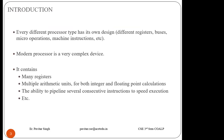Every different processor type has its own design — it has different registers, different buses, different micro-operations, and machine instructions. A modern processor is a very complex device; it contains many registers, multiple arithmetic units for both integer and floating point calculations, and the ability to pipeline several consecutive instructions to speed execution. For example, the i3, i5, and i7 processors each have different registers, buses, micro-operations, and machine instructions.